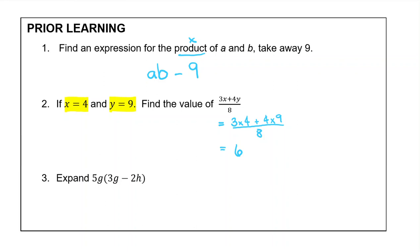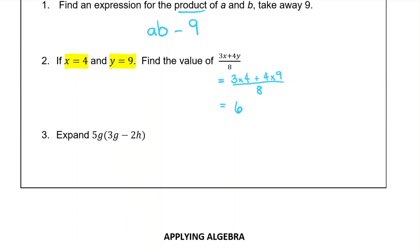Question three, this is a more recent thing, expanding our brackets. So to do this, we times the 5G that's out the front by each thing inside the bracket. So 5G times 3G: 5 times 3 is 15. A G times another G will make a G squared because there's two of them.